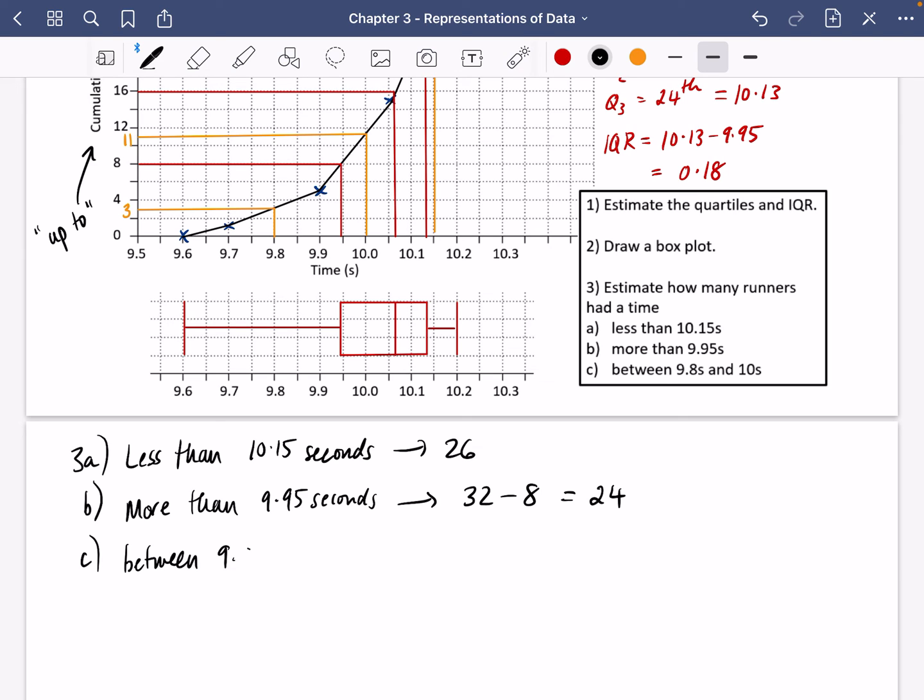So between 9.8 seconds and 10 seconds, it's just going to be the difference between that 11 and 3, which is going to be 8 items.